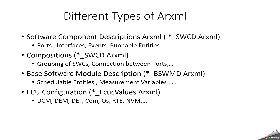The first type is the Software Component Description ARXML. It has details about software components — what kind of ports, interfaces, events, and runnable entities are there. All this information will be in the software component description file. It comes with the extension SWCD, for example: ApplicationSoftwareComponent1_swcd.arxml. By seeing this you can identify this file is for an application software component.